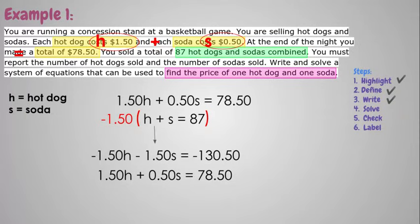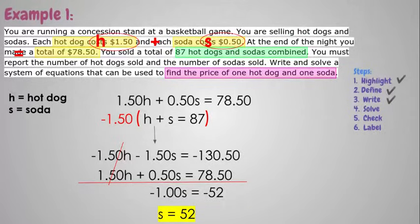When we eliminate, we combine everything. So when you combine your h's, they cancel out, and now we're going to add our s's, which gives us negative 1, and we're going to combine our constants, which gives us negative 52. And the last step in this process would be to solve it. So if you divide both sides by negative 1, it gives us positive 52. So that means there are 52 sodas that were sold that day.